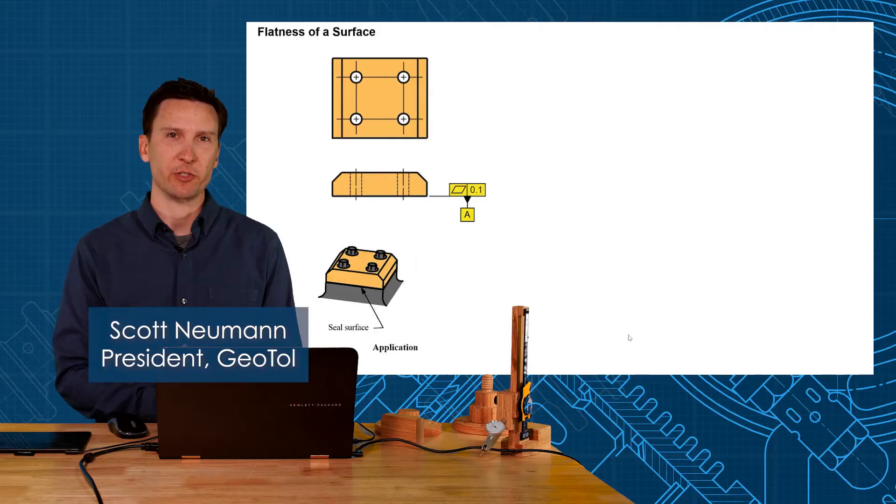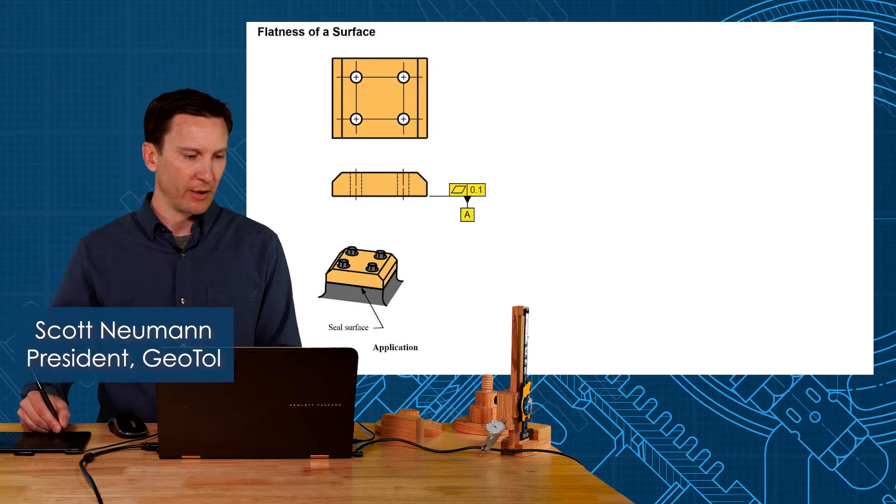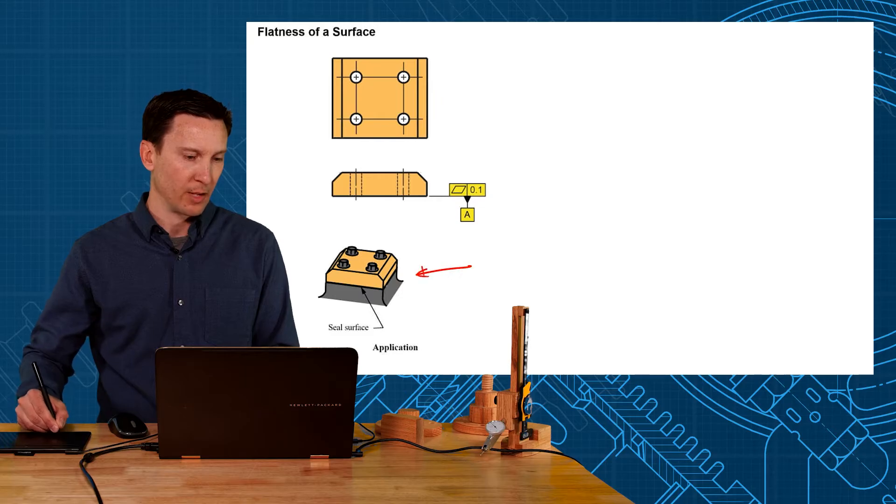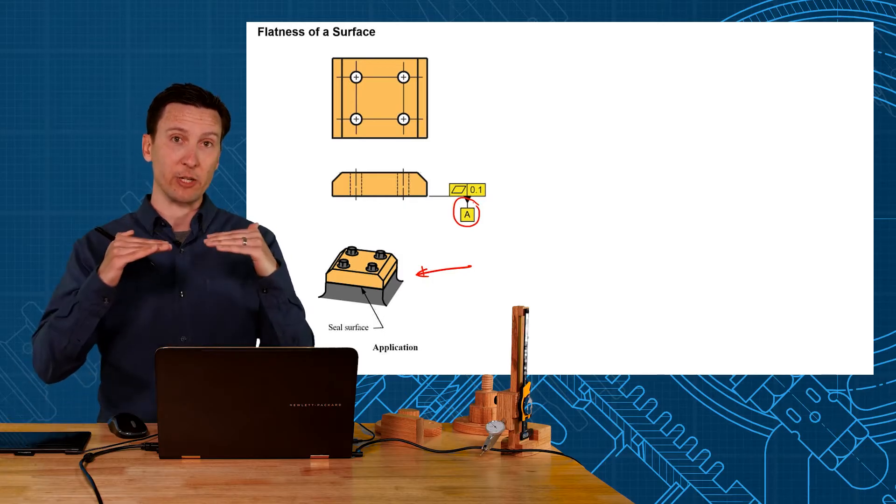Let's look at flatness applied to a surface. Here we have an application of an end cap that's supposed to mount to this black part and maintain a seal on that bottom surface. The bottom surface where it mounts will be selected as the datum feature, that's going to be A.